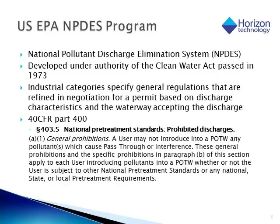Of the example programs indicated, the EPA NPDES program is certainly the largest. This is based on the elimination of pollution due to industrial discharges. Categories of industry specify general regulations that are then refined in negotiation for a permit based on discharge characteristics and the waterway accepting the discharge. Even though an industry may be discharging to a publicly owned treatment works, they still have rules on what they can and cannot discharge — if they disrupt the processes in the wastewater treatment plant, that could be very important to avoid.